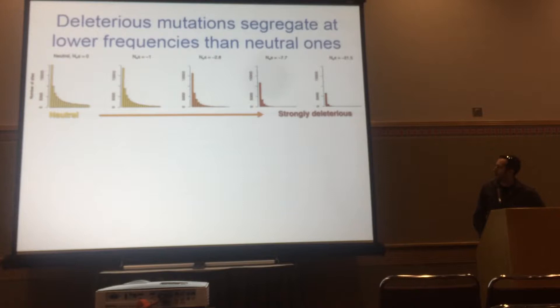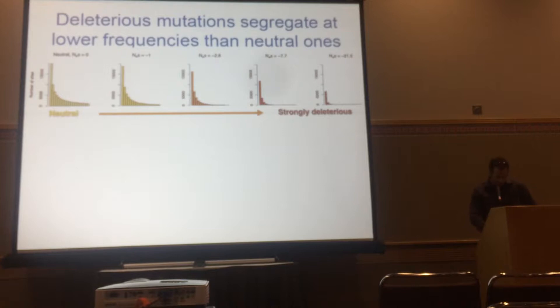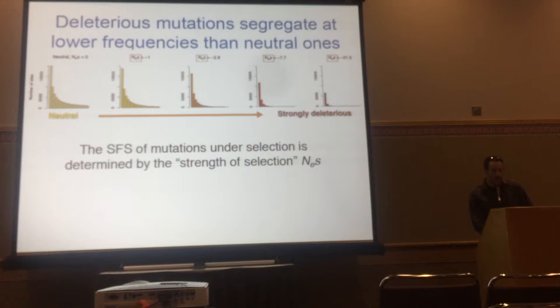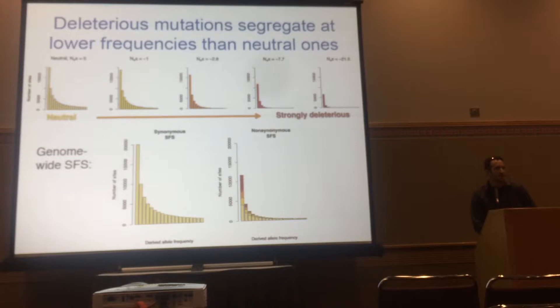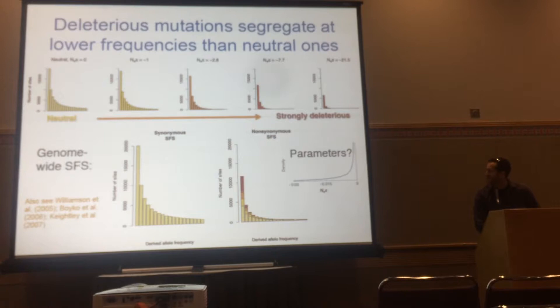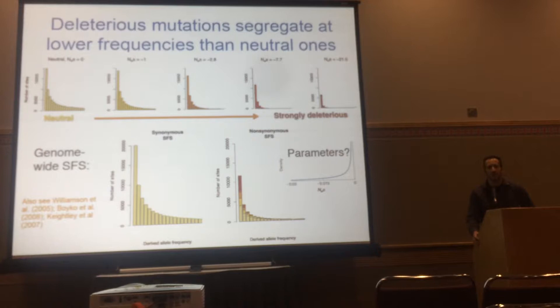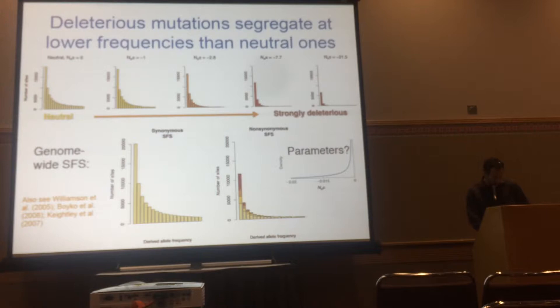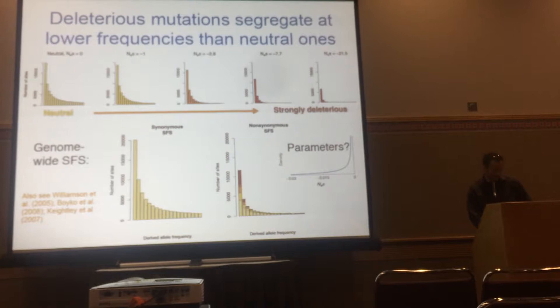The approach we took was to use the site frequency spectrum. The frequency spectrum is very sensitive to selection and demography — as you move from left to right, mutations become more deleterious, fewer are segregating, and those that are are rare. Since demography also affects the frequency spectrum, we used synonymous sites to first estimate the demographic histories of different populations, then conditional on those estimates, estimated the DFE. We extended the Poisson random field approach to consider multiple species jointly, using a likelihood ratio test framework to test whether DFE parameters differ across species. Importantly, each species has its own demographic history fit to the polymorphism data, so inferences shouldn't be confounded by demography.